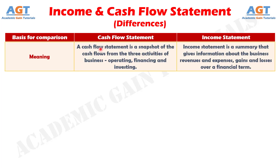Difference No. 1: The Income Statement is a part of a financial statement which shows the revenues, gains, expenses and losses for a particular accounting period. Conversely, a Cash Flow Statement is a sketch of cash receipts and disbursements for a specific period of time. It describes the reasons for the increase or decrease in the cash position of the firm.